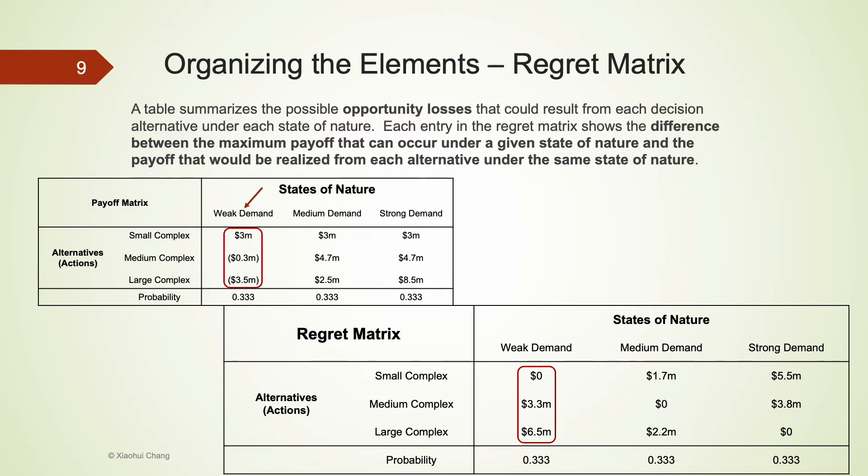The opportunity loss is the difference between what the company could have made if the best action is taken versus the actual payoff. Unless the company takes the best action, the opportunity loss or the corresponding entry in the regret matrix is always positive.